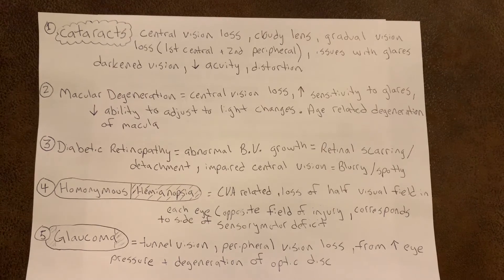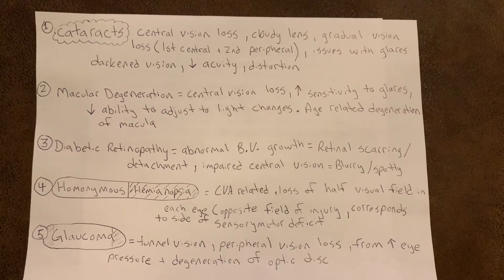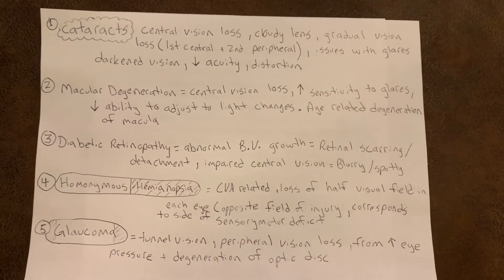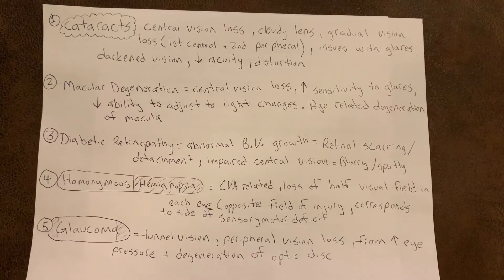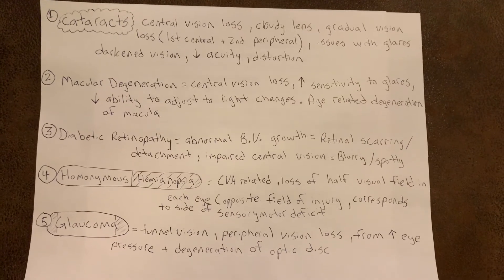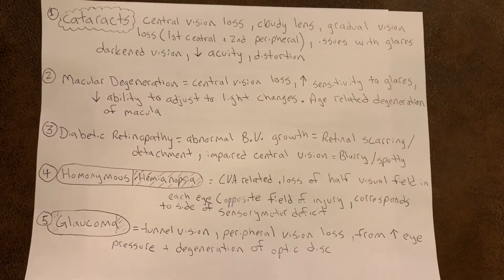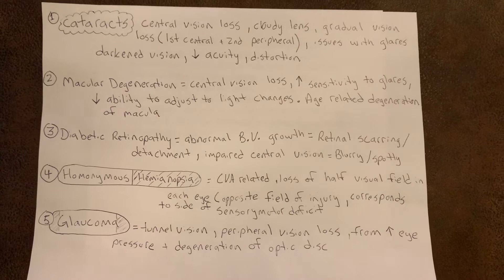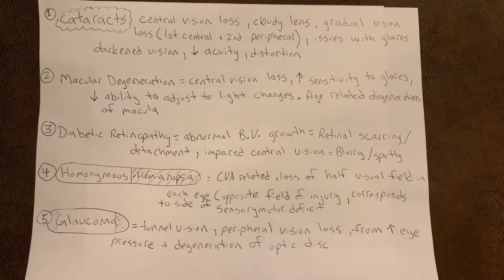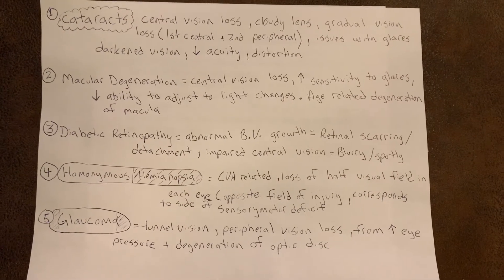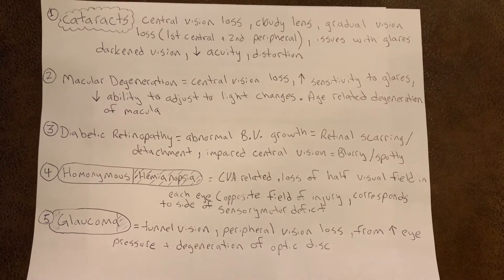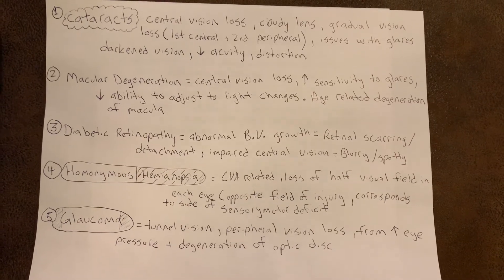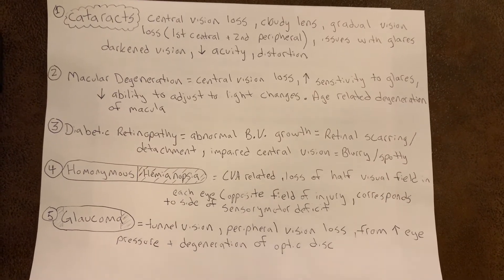The fourth type of vision loss is homonymous hemianopsia, which is CVA-related and often caused by strokes. There is loss of half the visual field in each eye, and the opposite field of injury corresponds to the side of sensory motor deficit.